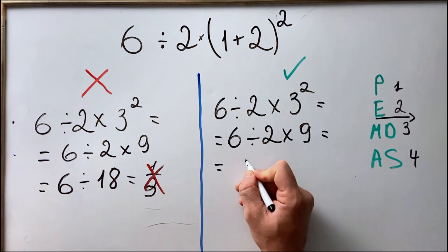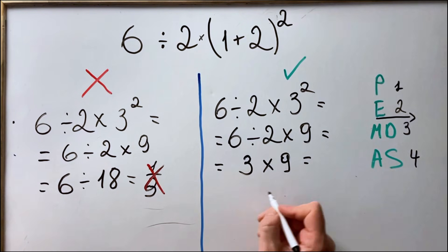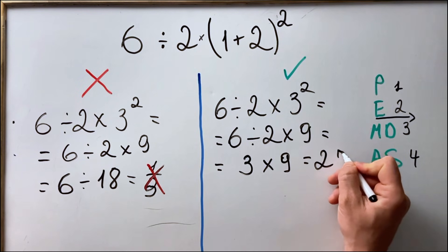So 6 divided by 2 equals 3, multiplied by 9, and the correct answer is 27.